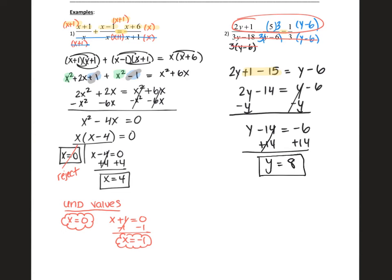Now, before we can make sure that this is our final answer, we have to check for our undefined values. So remember, we're setting each of the denominators equal to zero. So my first denominator is this 3y - 18. So I'm going to solve by setting that equal to zero. So we add 18 and we divide by three.